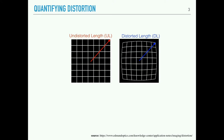Before I go on, I should talk about how we actually quantify distortion in an image. We can look at the undistorted image diagonal and compare that to the distorted image diagonal. The reason why we use the diagonal is because the corners are where we expect to see the most distortion. To quantify distortion, we calculate a percentage — the difference between the undistorted length and the distorted length as a percentage of the undistorted length.